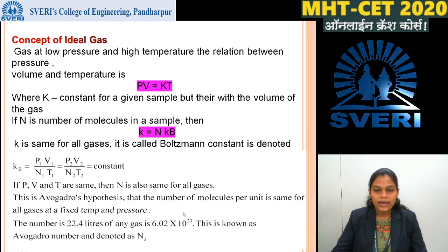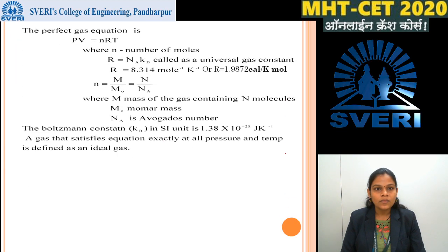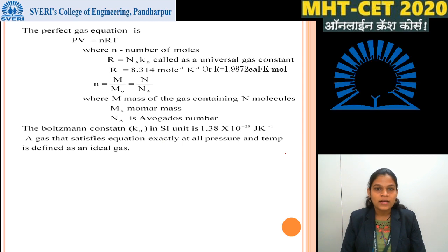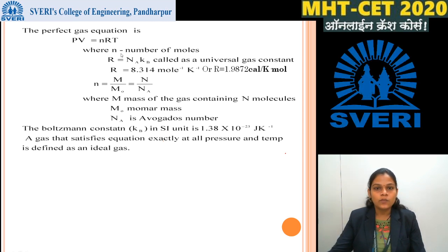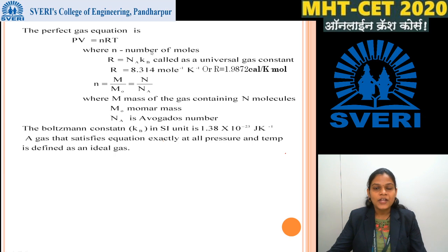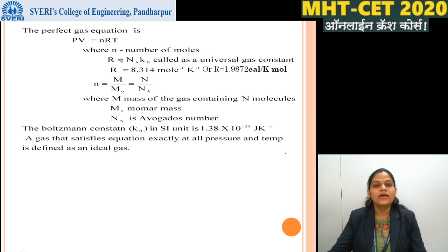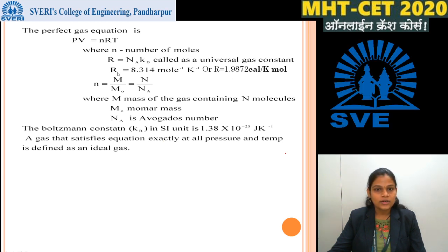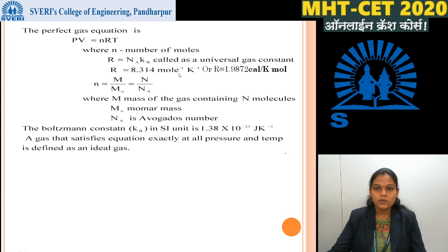The perfect gas equation is PV = nRT, where small n is the number of moles and capital N is the number of gas molecules. Capital R = NA × KB, called the universal gas constant. The value of R is equal to 8.314 J per mole per kelvin.